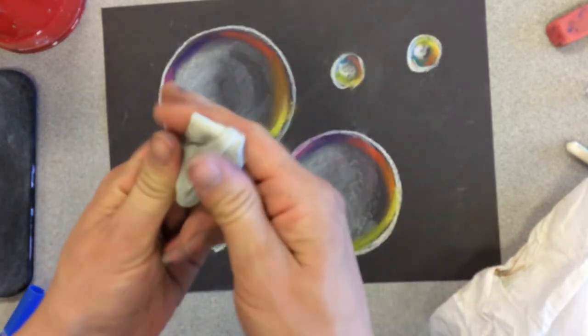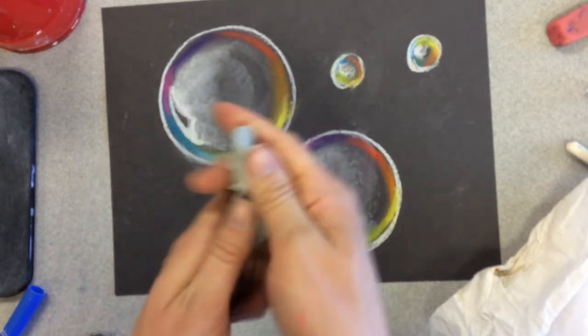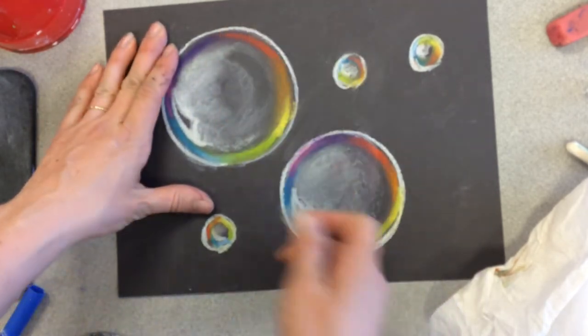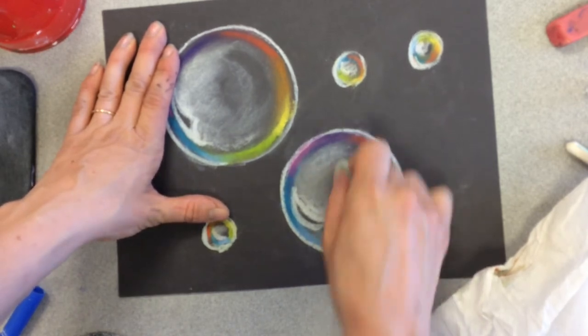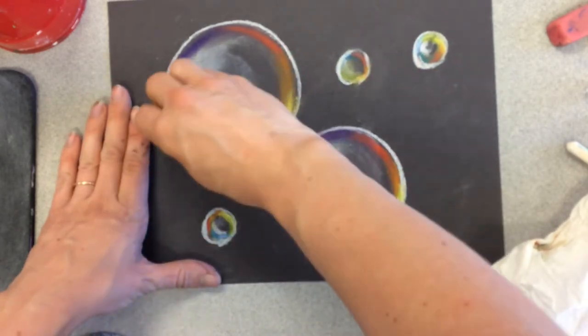They call it a kneaded eraser because you can stretch it and that's how you clean it. By stretching it it cleans it. I can also make little points with it. So I want to erase out some black spots again to make it a little more see-through looking. I'm staying in a curved motion this whole time.